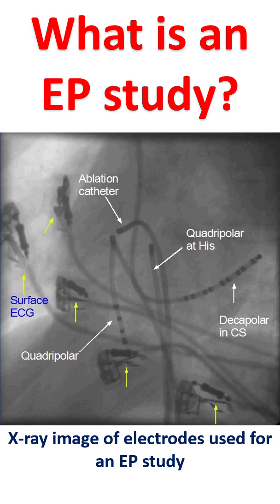If signals are recorded directly from the site of origin within the heart, the signals are stronger, more accurate, and with less mixing from signals from other parts. This is done during an Electrophysiology study — EP study. In EP study, small wires with multiple electrodes, or electrical contacts, on them are introduced into the heart through the blood vessels of the neck and groin.